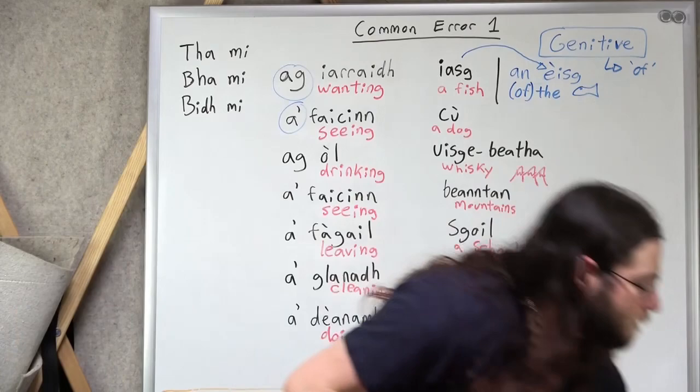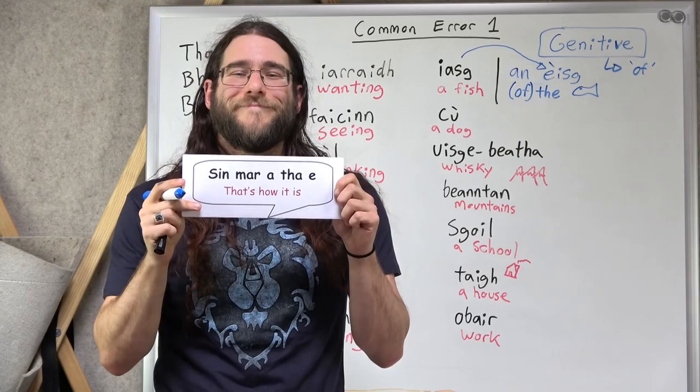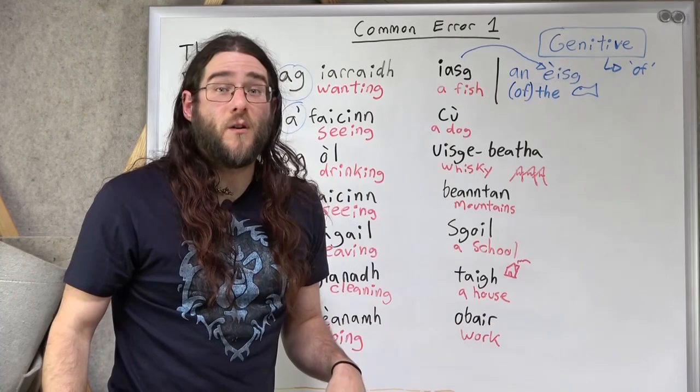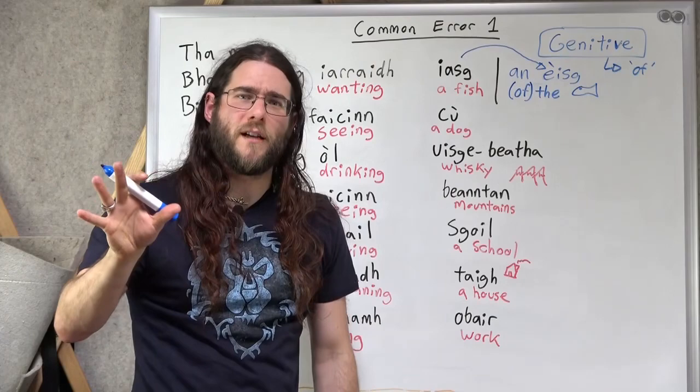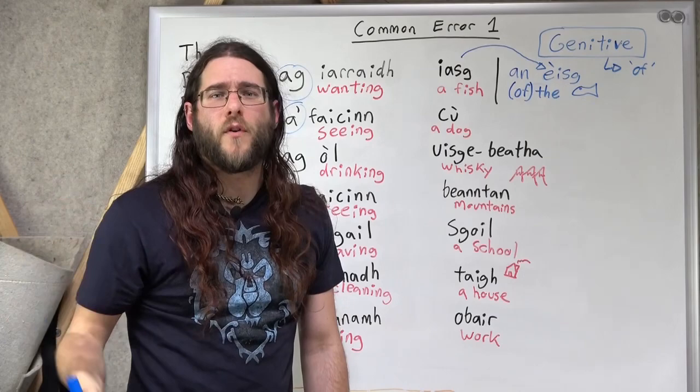Sin mar a tha. Sin mar a tha. So, if you're wanting something that's not specific, you know, like a fish. Ag iarraidh iasg. If you want the fish, then the word fish jumps into this genitive realm that a lot of people get scared about. And you don't have to get scared about it. It just means of. And it means you learn a new form of the word. That's all.